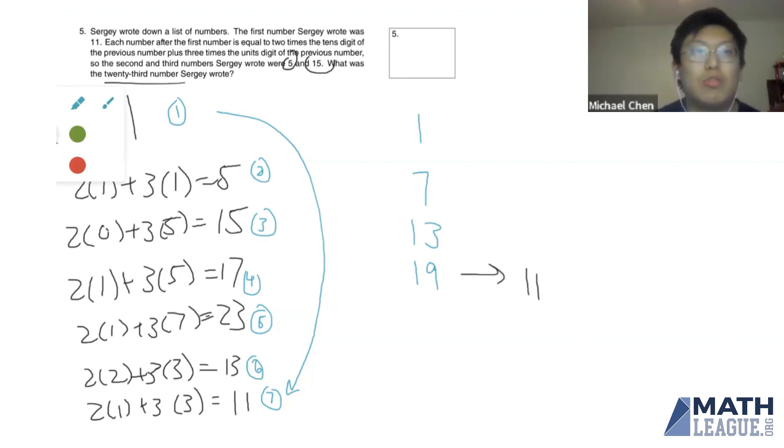Now, we want to get to the 23rd number, so we just keep going after that. And since we know the sequence repeats, we can just continue after 11 with this initial pattern we found with 5, 15, 17, and 23.